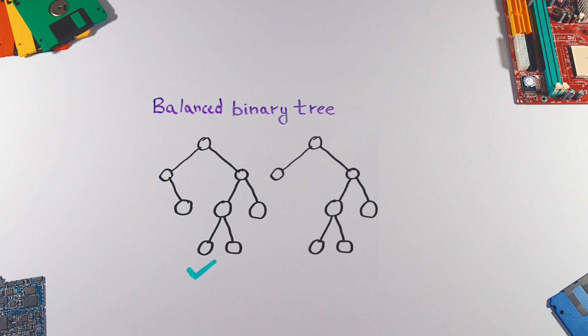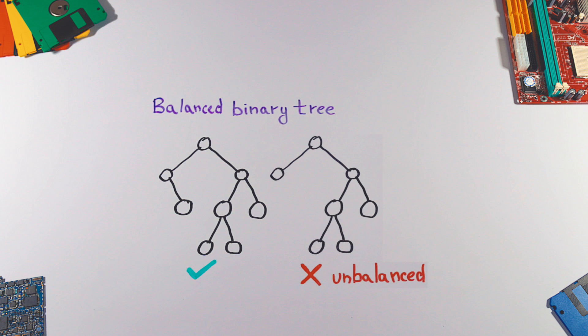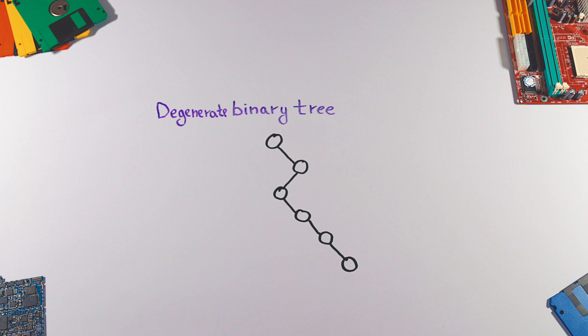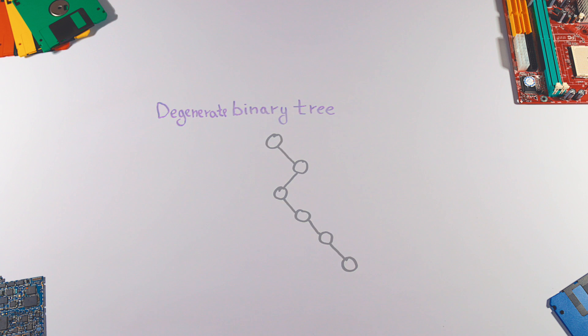In other words, a balanced binary tree is one in which the left and right subtrees of every node differ in height by no more than one. The worst case of an unbalanced tree is called a degenerate tree, which is a tree where each parent node has only one associated child node, degrading performance to the level of a linked list.